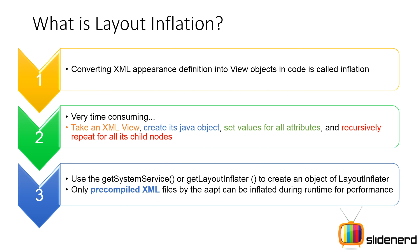So how do you use this layout inflator? There are two methods: you have context.getSystemService(), which is the right method, and then you have getLayoutInflater(). Both of these give you an object of LayoutInflator. Remember, you cannot say LayoutInflator L = new LayoutInflator() — that does not work; it's hidden from you for creation.